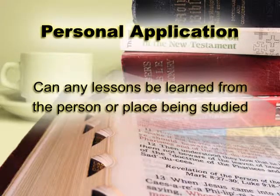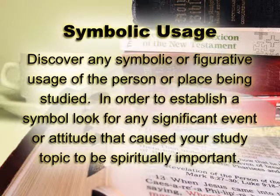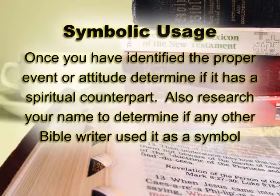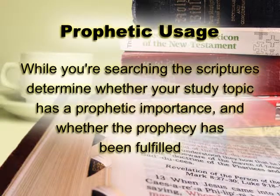Personal Application: Can any lessons be learned from the person or place being studied? Symbolic Usage: Discover any symbolic or figurative usage of the person or place being studied. In order to establish a symbol, look for any significant event or attitude that caused your study topic to be spiritually important. Once you have identified the proper event or attitude, determine if it has a spiritual counterpart. Also research your name to determine if any other Bible writer used it as a symbol. Prophetic Usage: While searching the scriptures, determine whether your study topic has a prophetic importance and whether that prophecy has been fulfilled.